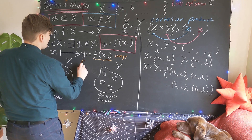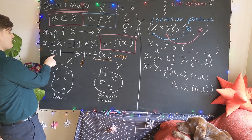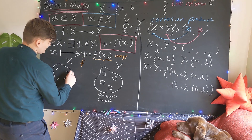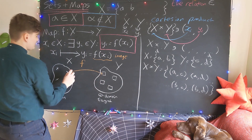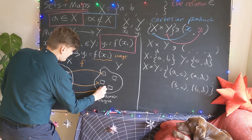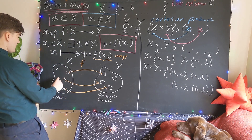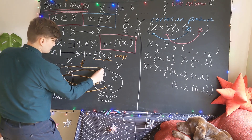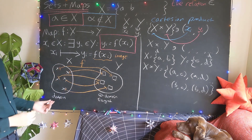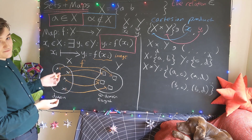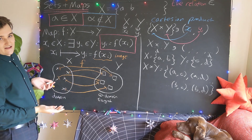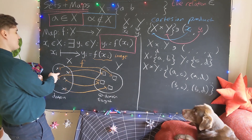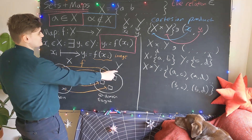To construct the map f, we simply need to define how the map acts on each of the elements. I could construct potentially any sort of map — I'll just do an arbitrary one. The actual definition of the map will be defined more concretely in context, but for now we're just thinking abstractly. The definition of a map is that it takes an element from one set and assigns it to an element in another set.